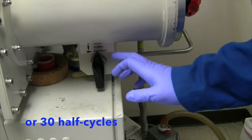As an alternative, you can also do six quick purges. If you're pumping in volatile compounds, 30 half cycles also work.